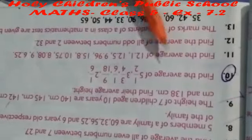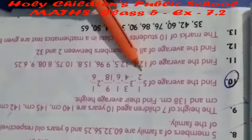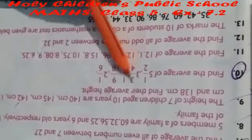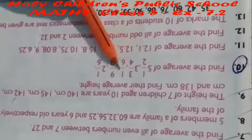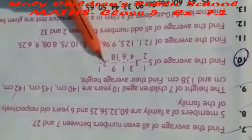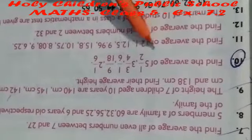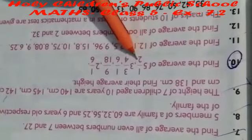Question number 10: find the average of 5½, 3¾, 1⁄6, 9⁄8, 2, and 1⁄6. First, we convert the mixed fractions into improper fractions.